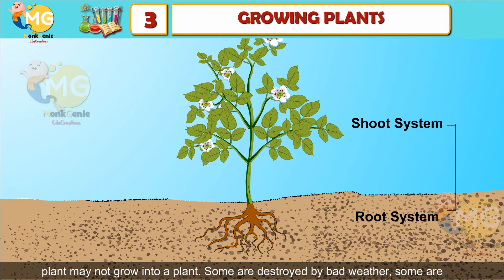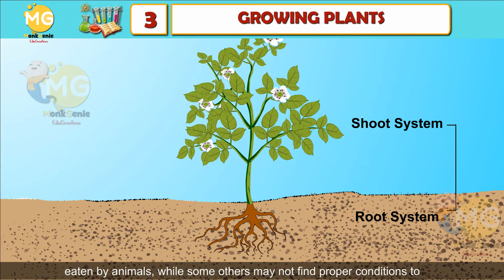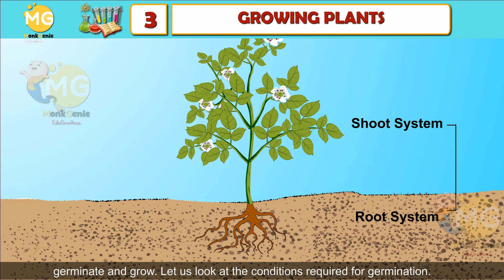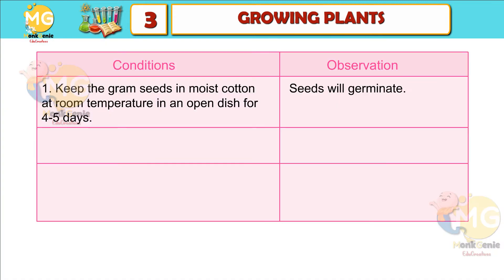Not all seeds produced by a plant grow into a plant. Some are destroyed by bad weather, some are eaten by animals, while others may not find proper conditions to germinate and grow.